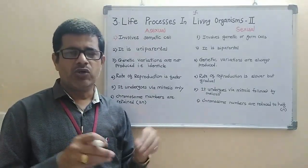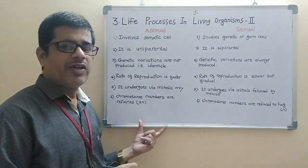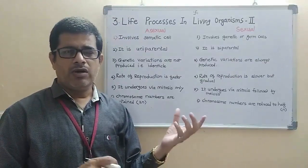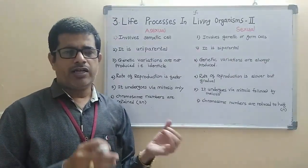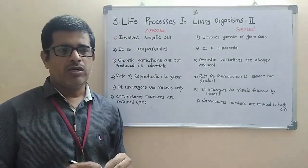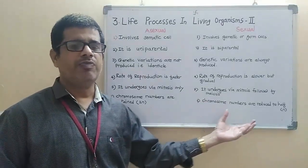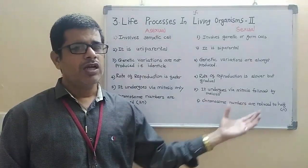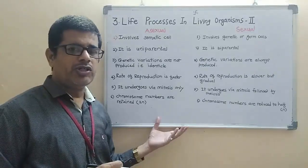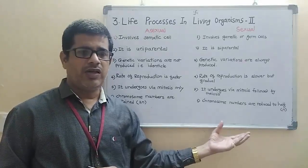In asexual reproduction, chromosomal numbers are maintained — if we initially have 2N chromosomes, they remain 2N throughout. In sexual reproduction, chromosomal numbers are reduced to half during meiosis, becoming N from the initial 2N. Finally, asexual reproduction occurs in lower or unicellular organisms, while sexual reproduction occurs in higher or multicellular animals.